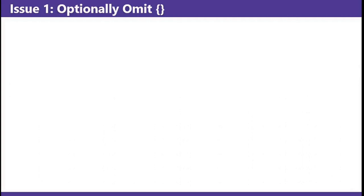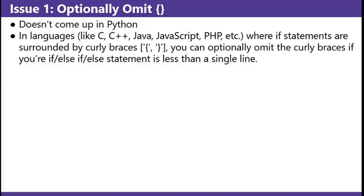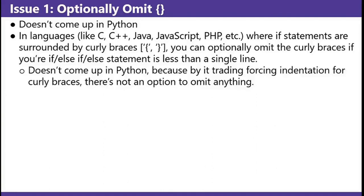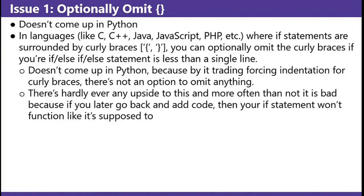Issue number one that comes up with ifs is optionally omitting curly braces. This doesn't come up in Python. In languages like C, C++, C Sharp, Java, JavaScript, PHP, etc., where if statements are surrounded by curly braces, you can optionally omit the curly braces if your if/else/else if statement is less than a single line. There's hardly ever any upside to this, and more often than not it's bad — if you later go back and add code, your if statement won't function like it's supposed to.